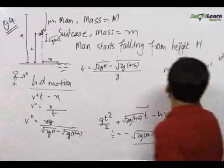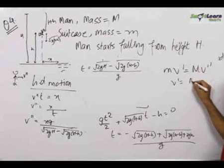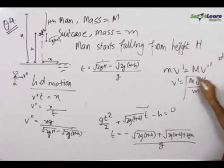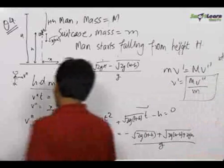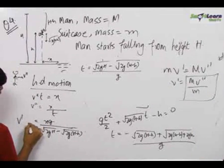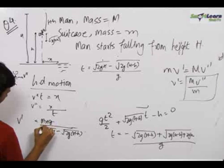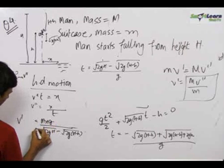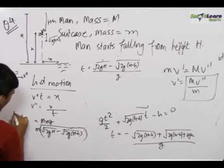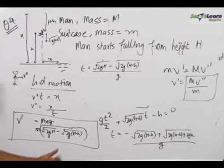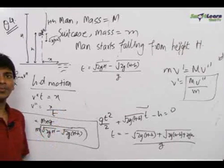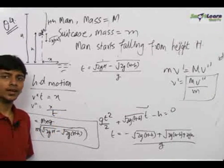We know that v' = Mv''/m by momentum conservation. So we multiply by M upon m to get the minimum velocity to be imparted to the bag by the man so that the man lands in the pond: v'_min = (M/m) × xg / (root over 2gH minus root over 2g(H minus h)).